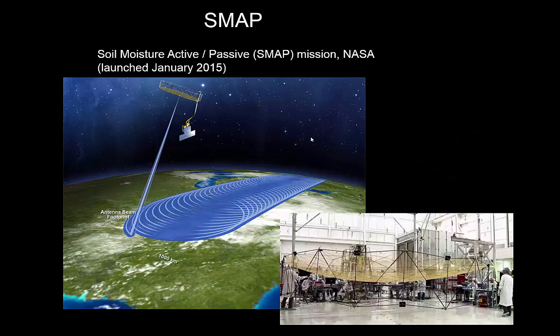In the previous video we talked about the SMAP mission, which had the interesting feature of having both a passive and an active microwave sensor on board. This would have really allowed downscaling or sharpening of the coarser passive microwave measurements with the radar measurements. But unfortunately, the radar instrument almost failed. That concludes this second video on passive microwave remote sensing.